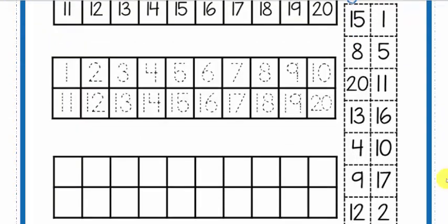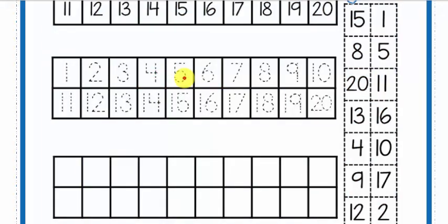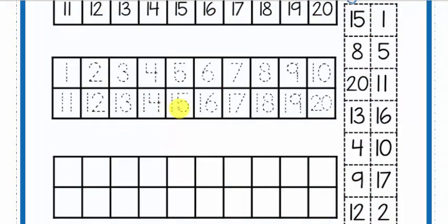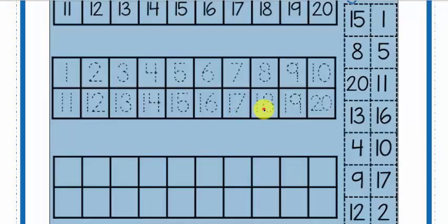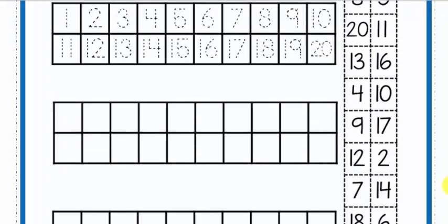Por aquí tienen una lista de números con líneas punteadas. Eso se supone que quien imprime el cuadernillo, o bien lo pueden hacer en su cuaderno, lo recortan y lo van pegando cada número donde corresponda. One, two, three, four, five, six, seven, eight, nine, ten, eleven, twelve, thirteen, fourteen, fifteen, sixteen, seventeen, eighteen, nineteen, twenty. Ahí están los 20 números. Los recortan y los pegan en el lugar que corresponde.